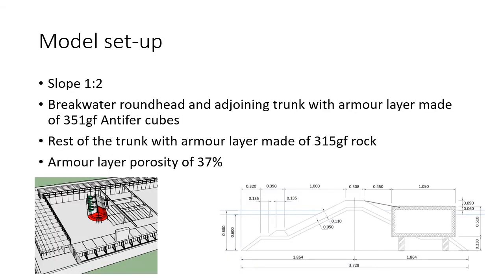A breakwater model, 9.3 meters long, 3.7 meters wide and 83 centimeters high, was built in the wave tank with the layout shown here. The armor layer slope was 1 to 2 and its porosity was meant to be 37%. In the round head and the adjoining trunk, the armor layer was made of antifer cubes, while in the rest of the trunk, the armor layer was made of rock.